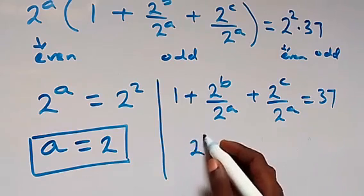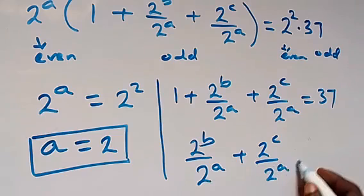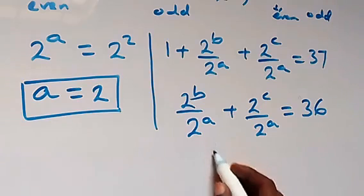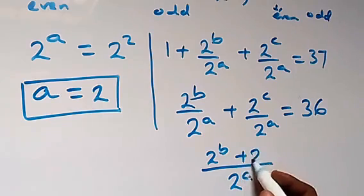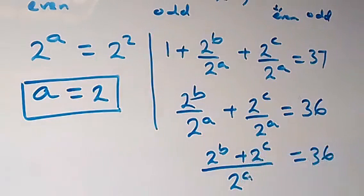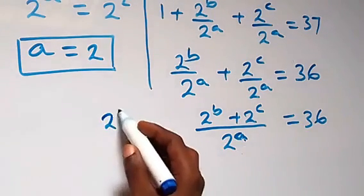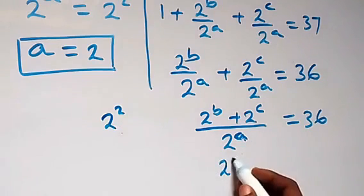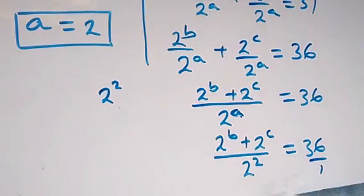So we have a equals to 2. Then on this side, let's take 1 to that side and this becomes 2 raised to power b over 2 raised to power a plus 2 raised to power c over 2 raised to power a now equals to 37 minus 1, which equals to 36. That is, when we bring this together, this is 2 raised to power a, then 2 raised to power b plus 2 raised to power c equals to 36. We have a equals to 2, so we replace here: 2 raised to power b plus 2 raised to power c over 2 raised to power 2 equals to 36.